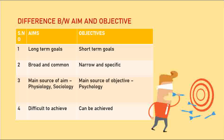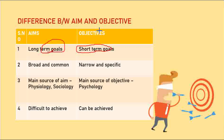First, let's look at aim. Aims are long-term in nature — they are long-term goals. We set a target and work toward achieving that goal over a long time. But objectives are short-term goals. In education, when we teach a lesson and complete it within one month, that is a short-term goal — that is an objective.